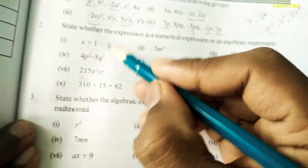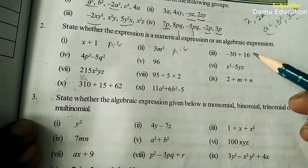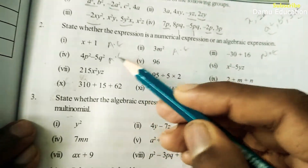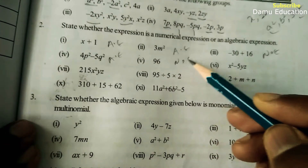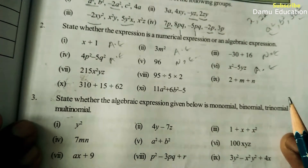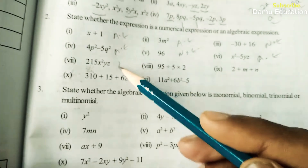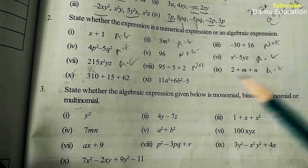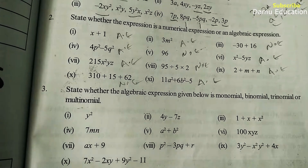x plus 1 is an algebraic expression. 3m square is an algebraic expression. Minus 30 plus 15 is a numerical expression. 4p square is algebraic — because an alphabet is present, that makes it algebraic. 96 is a numerical expression. 6x square minus 5yz is algebraic. 2251 is numerical. xyz is algebraic. Then numerical, algebraic, numerical, algebraic.